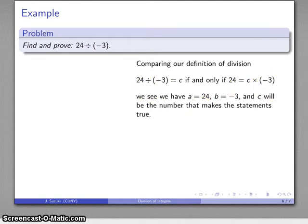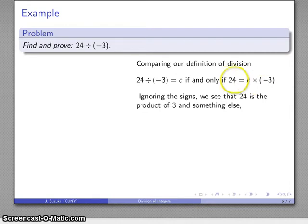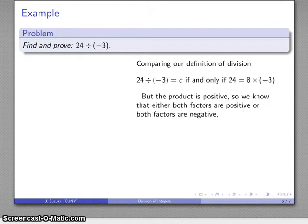Let's see—ignore the signs for a moment. I see that 24 is the product of 3 and something else. Well, that something else has to be 8. What I might try is just write in an 8 there. The problem is 24 equals 8 times negative 3—well that's not true, and the problem is 8 times negative 3 gives us the wrong sign, that's negative 24.